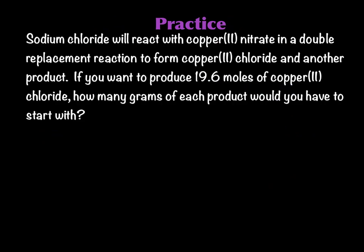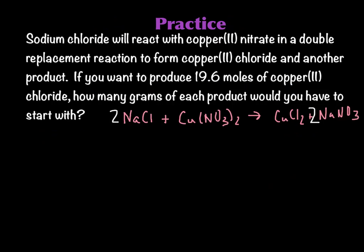Here's a practice problem we're going to work through. I want you to read this problem, pause this, and write the balanced chemical equation. This is the balanced chemical equation. Notice what we're given here — we're given 19.6 moles of copper(II) chloride. It doesn't matter if you're given something in the reactants or the products; you can go either way using stoichiometry. Notice it says how many grams of each product, so this is two action lines — starting with 19.6 moles of this stuff, finding grams of each product separately.